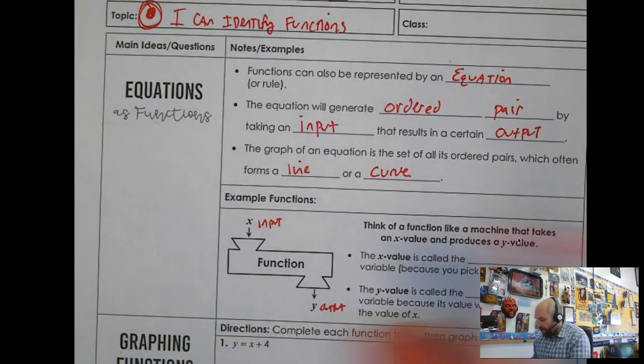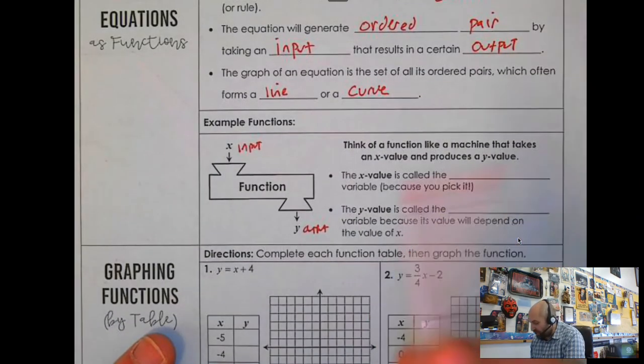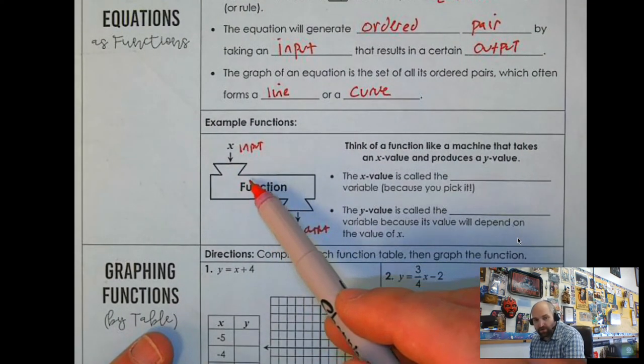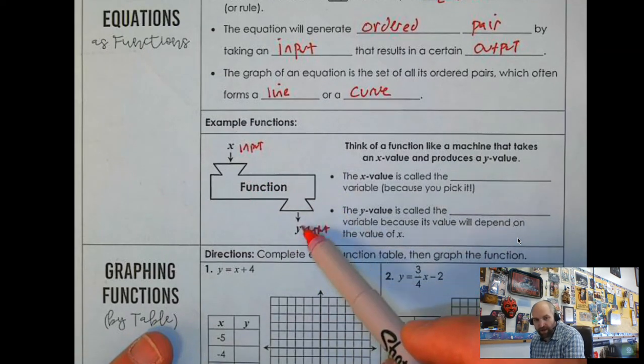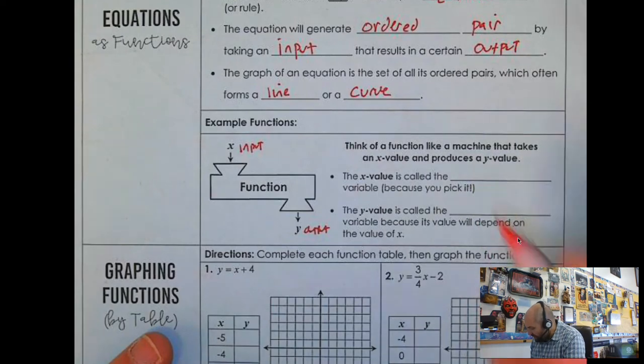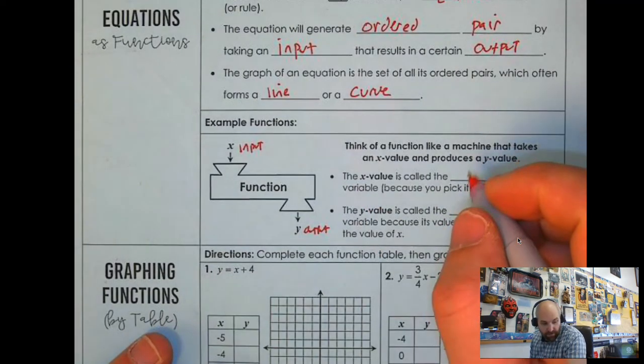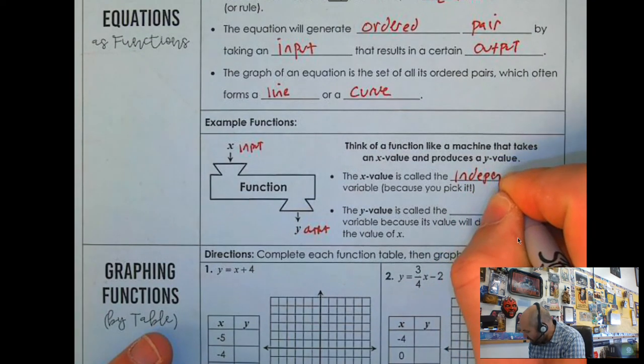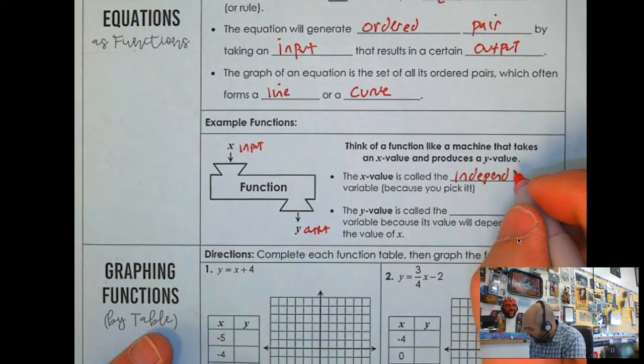Really an example of a function is a machine. You know, this x is the input and it goes through some sort of thing and then it pops out for the y. That's an output. So think of a function like a machine. The x value we use another word, we call this the independent variable.